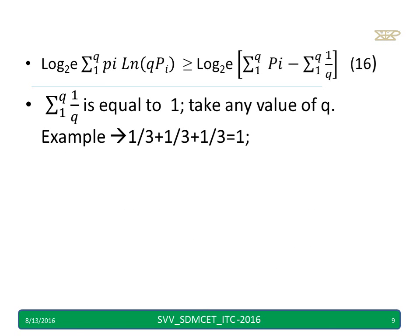I can rewrite this equation number 16. Simply I am multiplying summation pi inside. Now summation 1 by q is equal to 1. Take any value of q. If you take 3, 1 by 3 plus 1 by 3 plus 1 by 3 will get 1. And another important point is, when you add all the probabilities, pi will become equal to 1, and 1 minus 1 will become equal to 0. 0 into something is equal to 0.